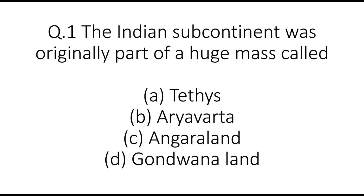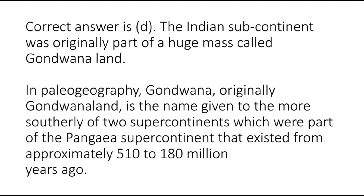The first question is: the Indian subcontinent was originally part of a huge landmass called — options are A: Tethys, B: Aryavarta, C: Angara land, or D: Gondwana land. The correct answer is D. The Indian subcontinent was originally part of a huge landmass called Gondwana land. In paleogeography, Gondwana land is the name given to the more southerly of two supercontinents which were part of the Pangaea supercontinent that existed from approximately 510 to 180 million years ago.